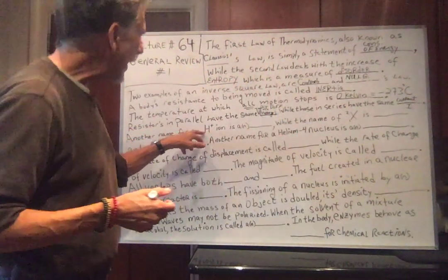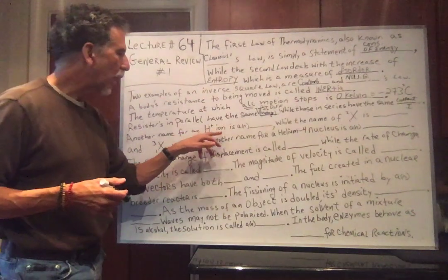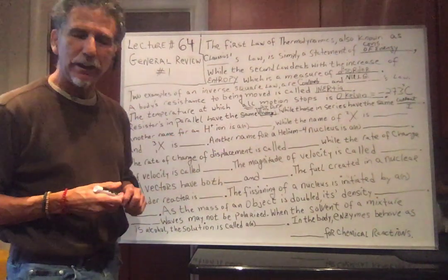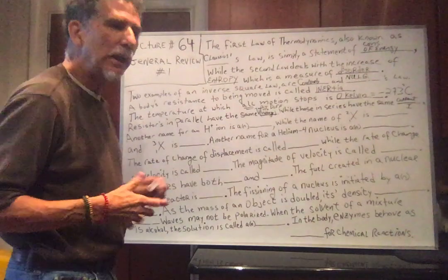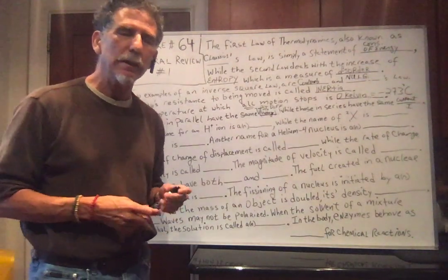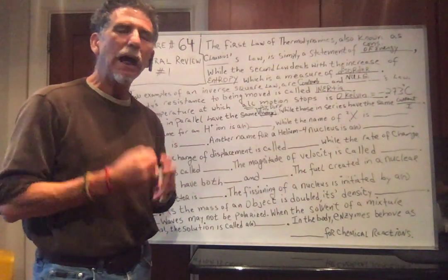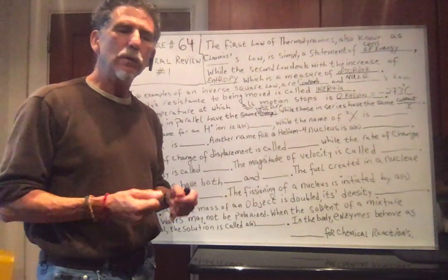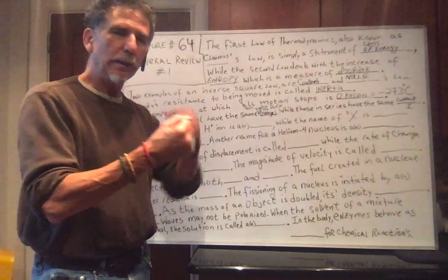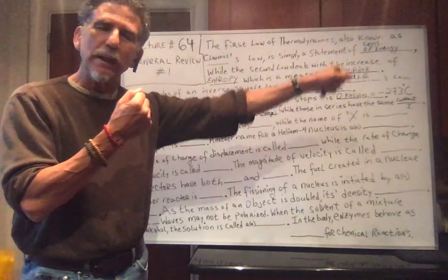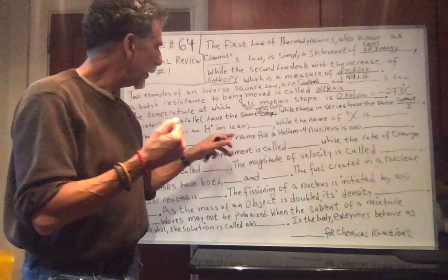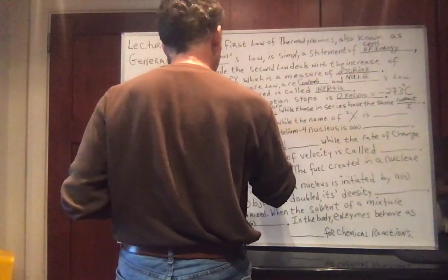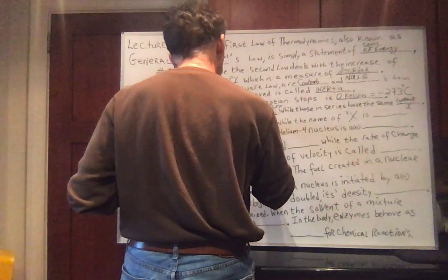Another name for an H-plus ion. An H-plus ion is simply a hydrogen atom with the electron taken away. A hydrogen atom is a proton and an electron. If you take away the electron, an H-plus ion is simply a proton.